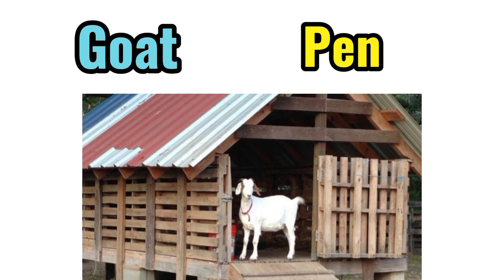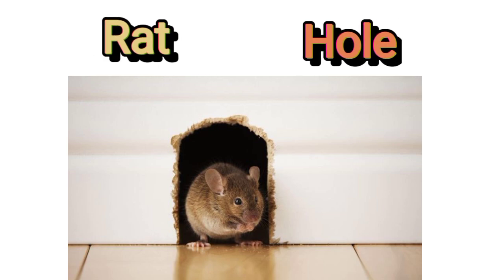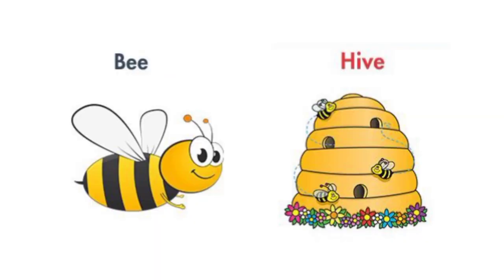Goat. Goat's home is called a pen. Rat. Rat lives in a hole. Bee. The home of a bee is called a hive.